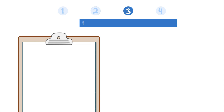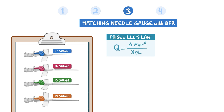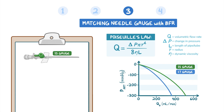Step 3 matches needle gauge with the prescribed blood flow rate according to Hagen-Poiseuille's law. Needle gauge can range from 17 to 14 gauge, but is typically 15 or 16 gauge. The lower the gauge rating, the larger the needle diameter is, and the higher the BFR. The clinician can decrease the gauge after each complication-free session until it reaches 15 gauge, which can support a BFR up to 400 milliliters per minute, or the gauge rating determined as the lowest gauge without patient adverse events.